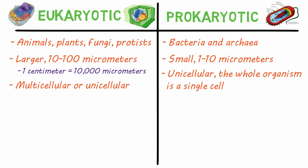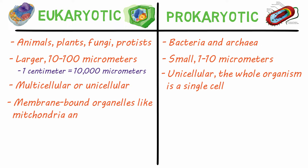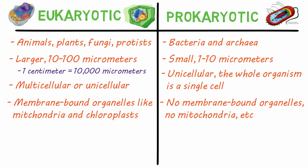The biggest differences come inside the cells. Eukaryotes have membrane-bound organelles. These include the mitochondria, chloroplast, and Golgi apparatus. These structures have their own membranes and perform specific functions within the cell. Prokaryotes have no membrane-bound organelles, so no mitochondria, no chloroplast, no endoplasmic reticulum, etc.